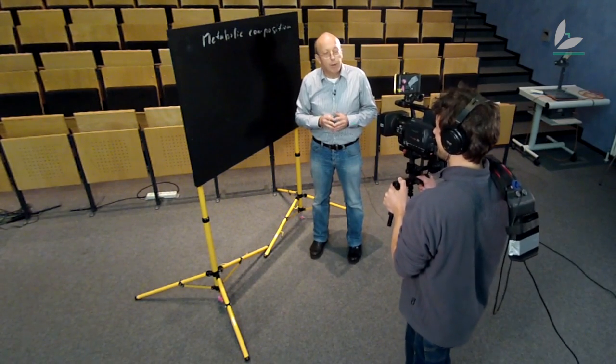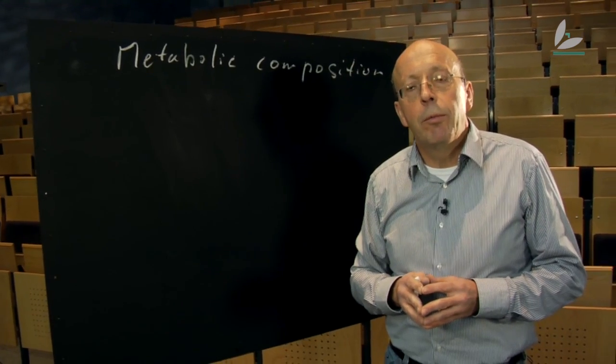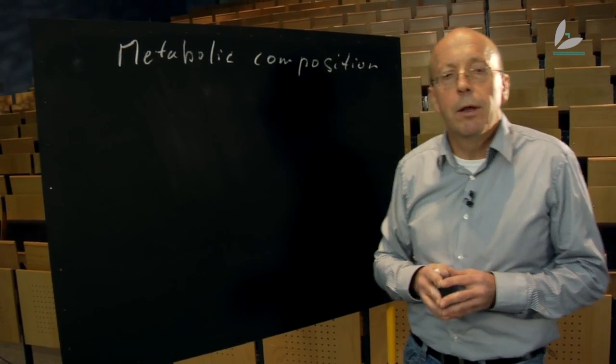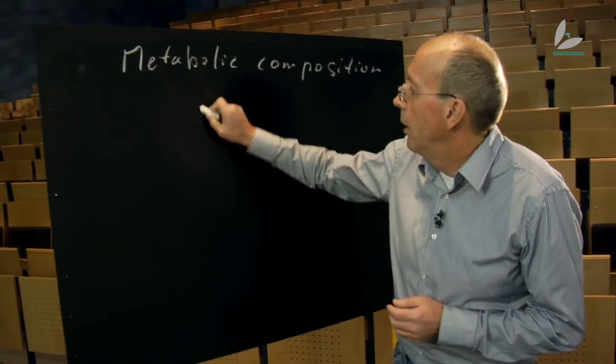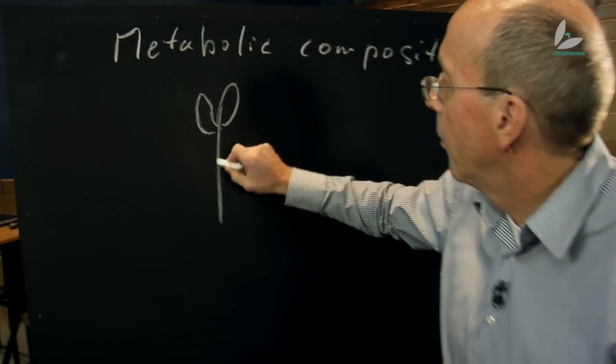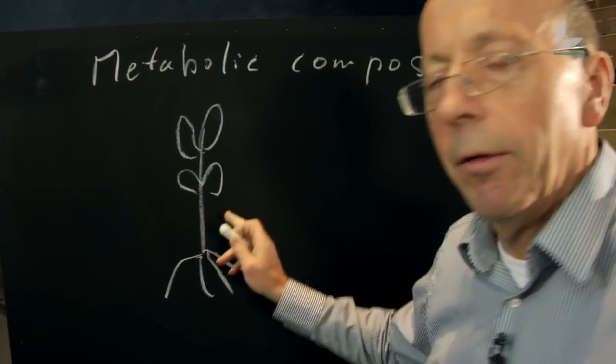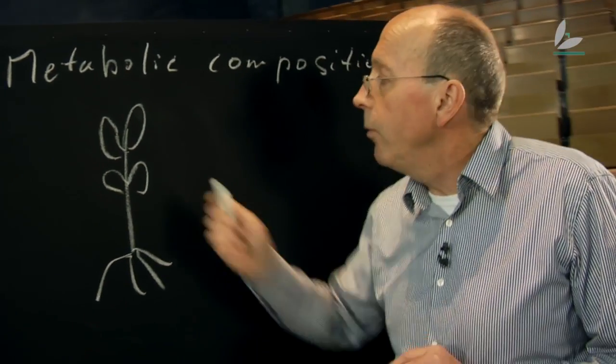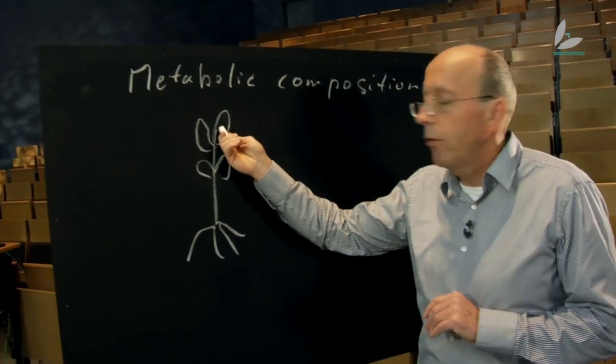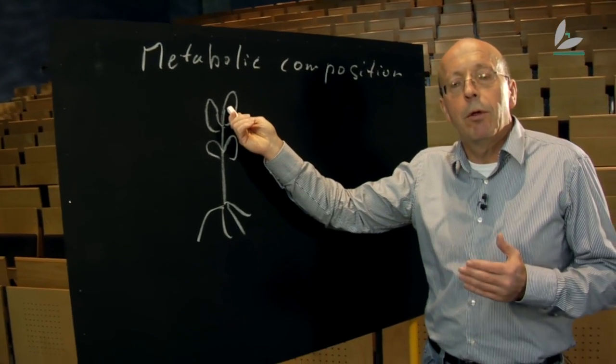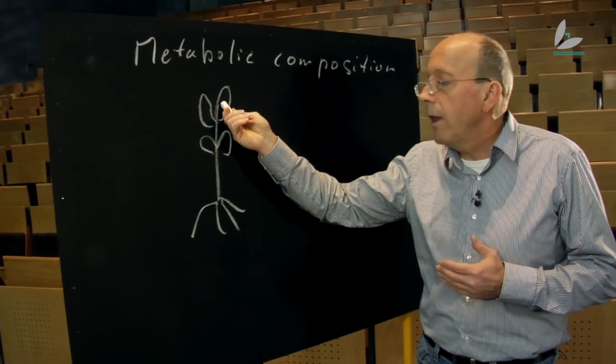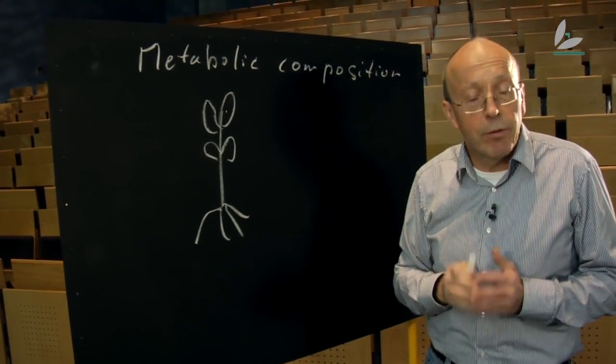Why is this of interest to understand or to know the complete metabolic composition of a plant? Let us have a look at a plant. A plant obviously has leaves and roots and many other plant systems. Now, when we analyze the metabolic composition, that is the presence of all small molecules in a leaf, we also will detect, for example, vitamin E.